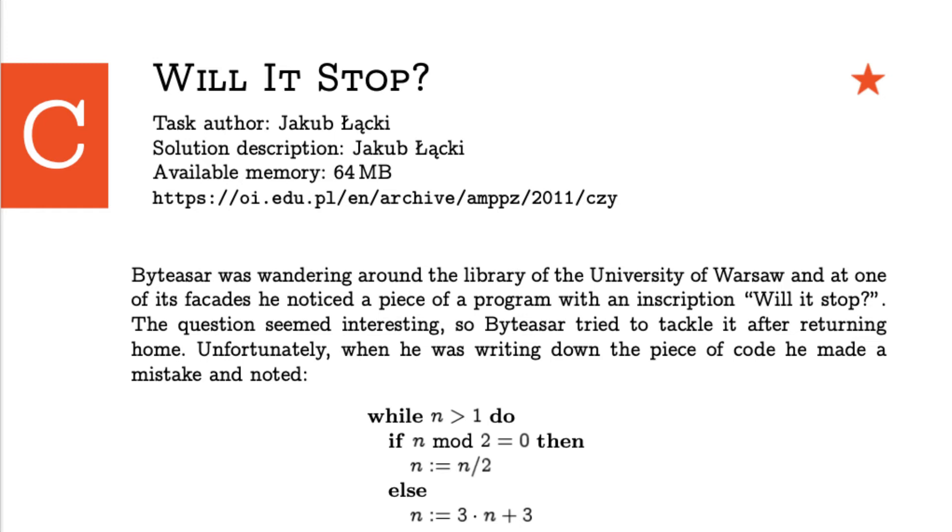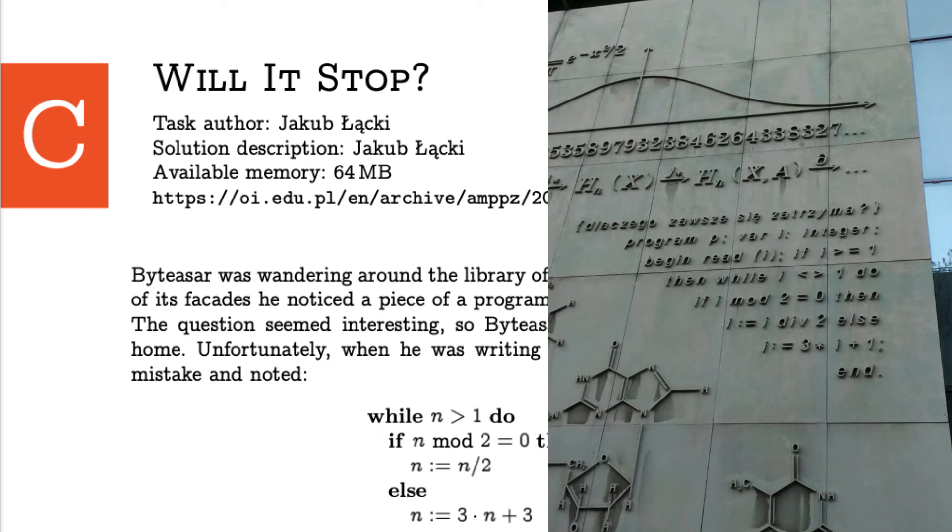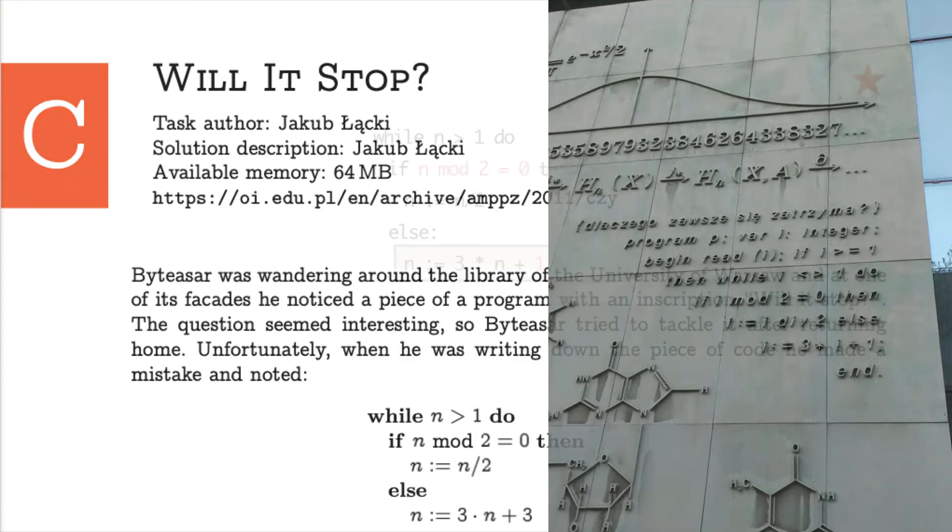This might make you curious about a couple of things. Is there such an inscription at the facades of the library of the University of Warsaw? It turns out there is indeed such an inscription. Did Baltassar actually make a mistake while noting it down? Yes, the original inscription on the facade is a slightly different code snippet, and it's a really small mistake that Baltassar made while noting down this piece of code.